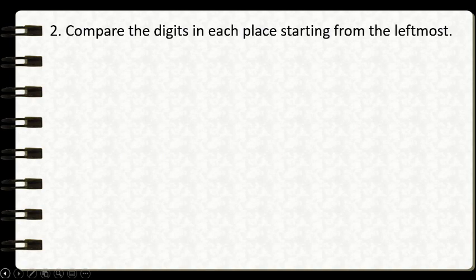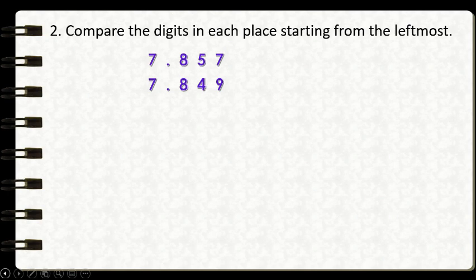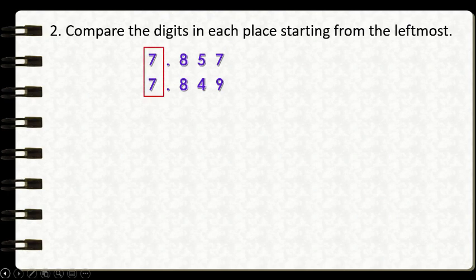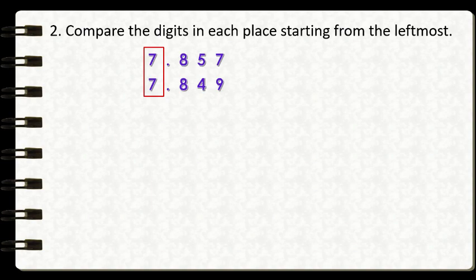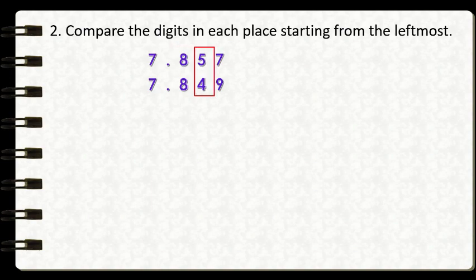Next step, compare the digits in each place starting from the leftmost. Here are our given numbers once again, and we are going to start comparing from the leftmost place value, since the left place value is always greater than the place value to its right. The leftmost place value is the ones place, and we can see that the digit in the ones place are both 7. Since they are equal, we move to the next place value to the right — that's the tenths place. Again, the digits here are the same: 8 and 8. So we will move once again to the right, to the hundredths place.